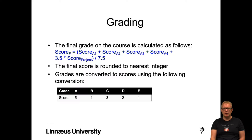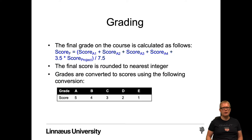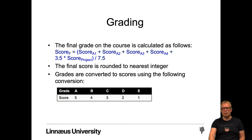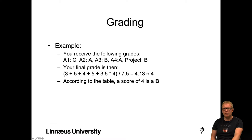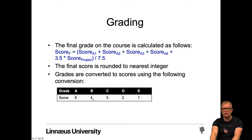The final grade is calculated as follows: we calculate the sum of the scores of the assignments plus 3.5 times the score of the project, divided by 7.5 credit scores. This final score is rounded to the nearest integer. Grades are converted to scores using the following conversion: five points for grade A, one point for grade E. For example: Assignment 1 C, Assignment 2 A, Assignment 3 B, Assignment 4 A, and Project B gives us three plus five plus four plus five, plus 3.5 times four, divided by 7.5, which equals approximately 4.13, rounded to four — a final grade of B.